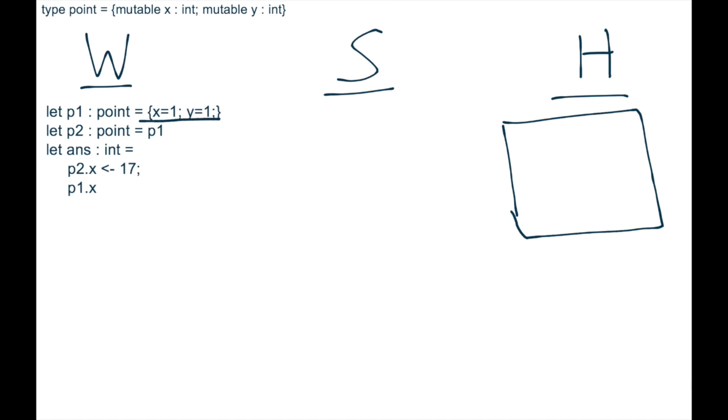And then in the heap here, we'll put the double entry cell. We have x, we have y, exactly what we drew in the last slide, it's the same record. Remember we put the mutability boxes, because if you look in the type definition, both are declared as mutable with that keyword, and both get value 1.